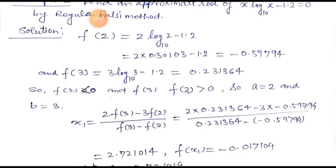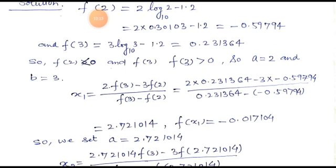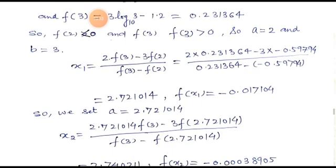By the formula of the Regula Falsi method, all conditions are satisfied since f(2) is negative and f(3) is positive. So x₁ = [2·f(3) - 3·f(2)] / [f(3) - f(2)]. Putting in the values of f(3) and f(2), after solving we get x₁ = 2.721014. Putting this into f(x₁) gives a negative value, so we set A = 2.721014.